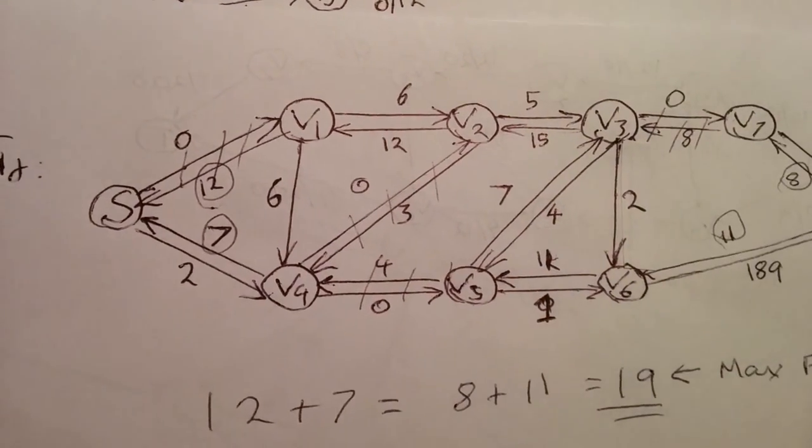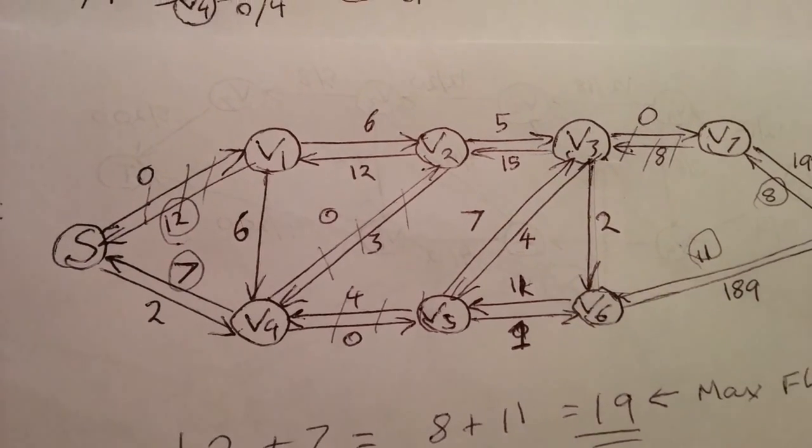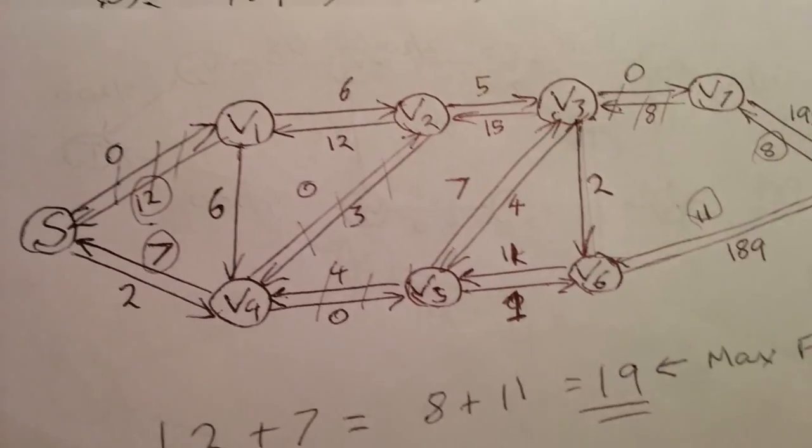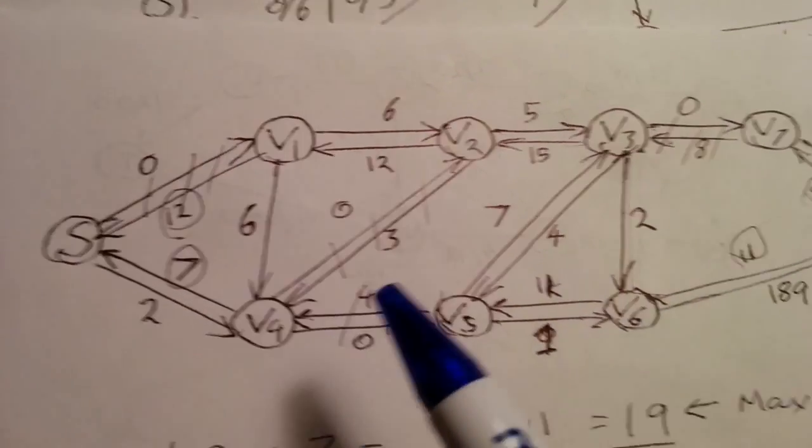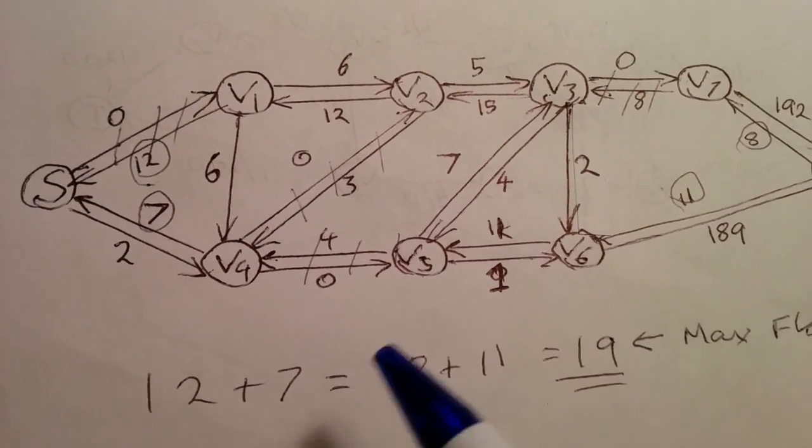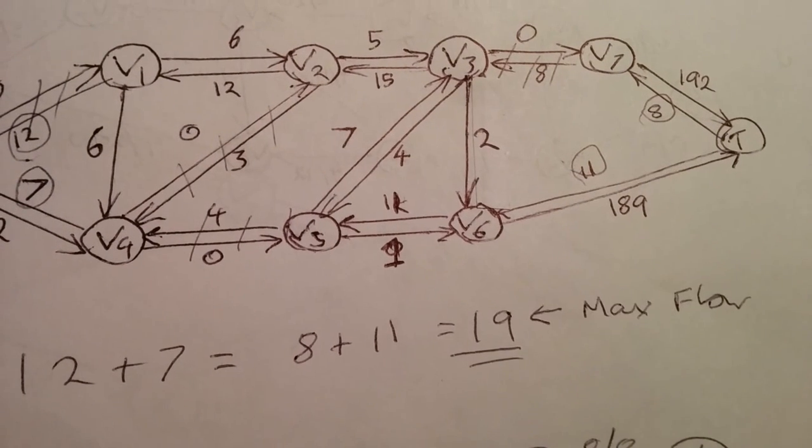So we can carry on taking these steps until we reach an end point such as this, where we can observe that there are no augmenting paths left. And to find the max flow, what we can do is we add the two values going into the source, here, 12 and 7, and the two values coming out of the sink, 8 and 11. We add 12 and 7, and we add 8 and 11. We see 19, which is the max flow through the system.